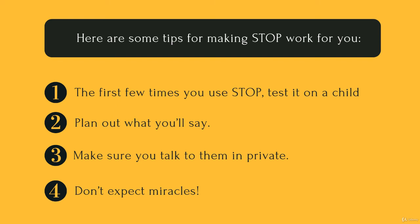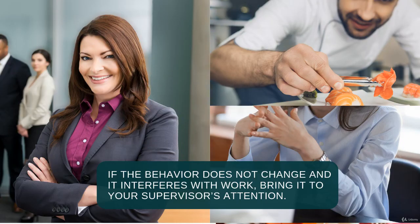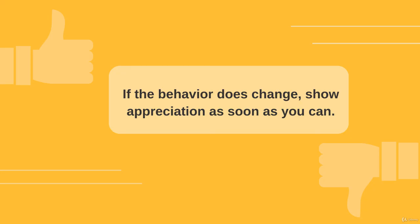Here are some tips for making STOP work for you. The first few times you use STOP, test it on a child when they act inappropriately. Plan out what you'll say — this will help you identify your feelings, options, and possible results. When you talk to the offender, make sure you're in private. Don't expect miracles. If the person does not change their behavior, you can try the process again until it does work. If the behavior does not change and it interferes with work, bring it to your supervisor's attention. If the behavior does change, show appreciation as soon as you can.